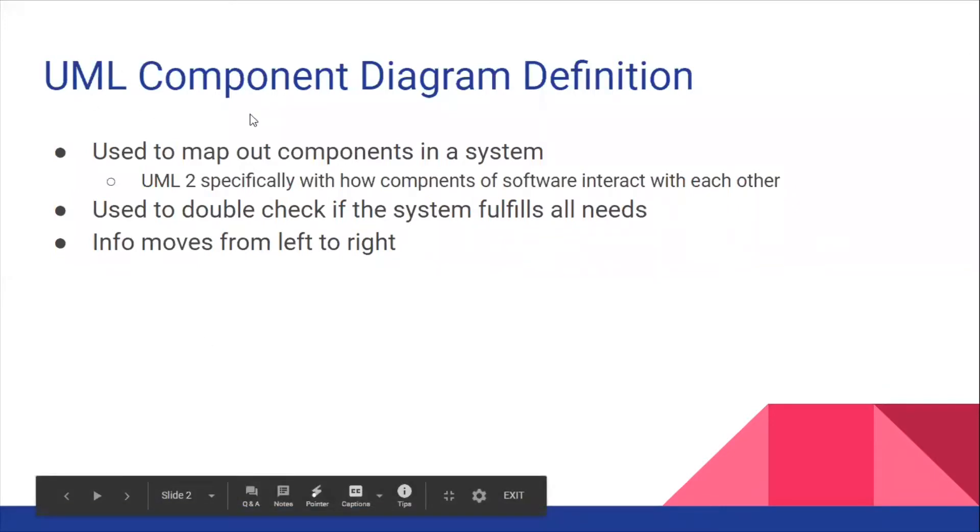A UML component diagram often refers to how components interact in a system, more specifically how information flows through the system. Originally, the UML component diagram often focused on physical aspects, like how a paper would move into a file or from that file to different parts of the office. But UML 2 specifically goes over components of a software system and how they react with each other.